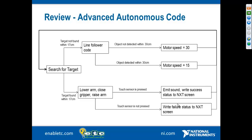We then built some autonomous code — essentially a modified line follower that performed an arm and gripper action. The code started off searching for a target, and if a target was found within 17 centimeters it would perform a series of actions: lower the arm, close the gripper, then raise the arm to pick up an object. It used a touch sensor to verify that an object was picked up, and if pressed, the NXT would emit a sound and write success on its screen, then loop back to searching for target mode — allowing the same code to find the drop destination.